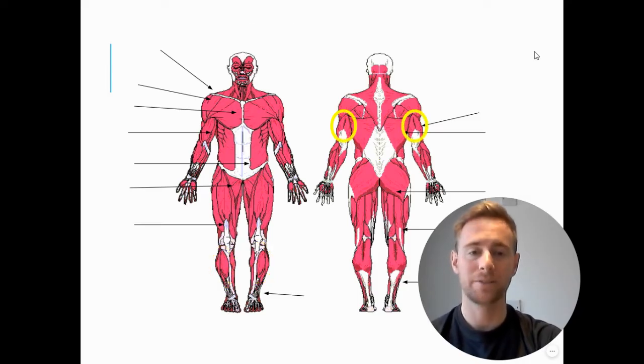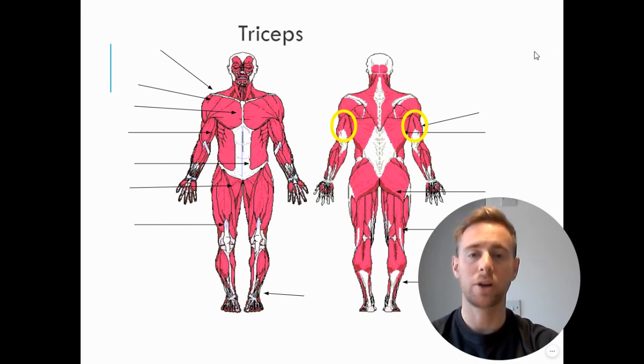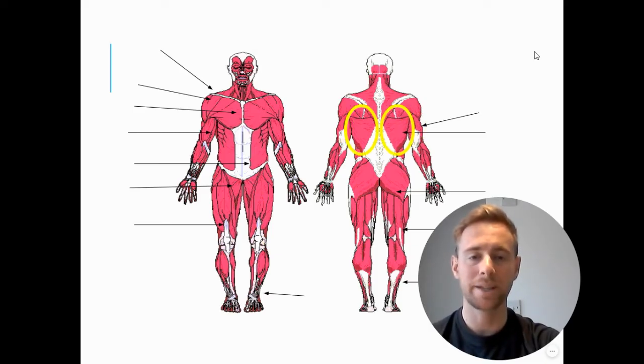Then on the back of our body opposite to the biceps, we have the triceps on the back of our arms. We then have the main muscle in our back which is the latissimus dorsi.